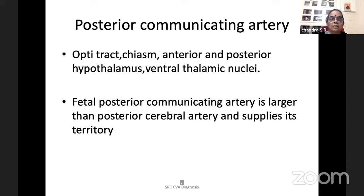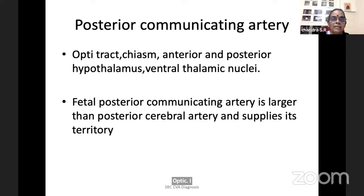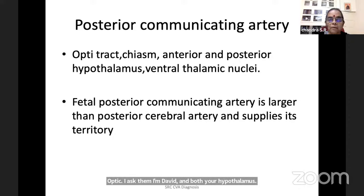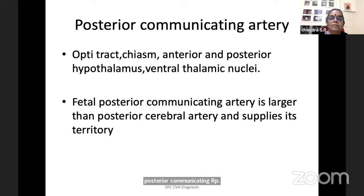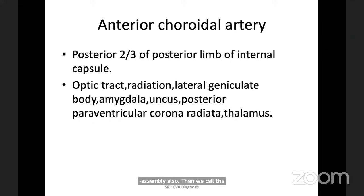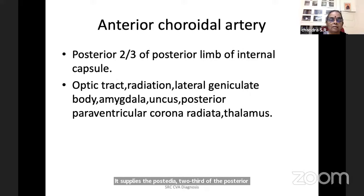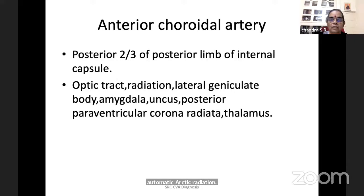The posterior communicating artery supplies the optic tract, optic chiasm, anterior and posterior hypothalamus, and ventral thalamic nuclei. When the fetal-type posterior communicating artery is larger than the posterior cerebral artery, it supplies the territory of the posterior cerebral artery also — then it is called a fetal posterior communicating artery. The anterior choroidal artery supplies the posterior two-thirds of the posterior limb of the internal capsule, and the structures involved include the optic tract, optic radiation, lateral geniculate body, amygdala, and posterior paraventricular corona radiata and thalamus.